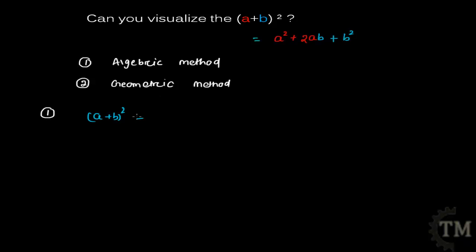Let me solve it in algebraic method. Here, (a+b)² means we can write it as (a+b) into (a+b). Now I will apply distributive law: a will be multiplied with a and a will be multiplied with b, that is a² + ab, then b with a and b with b: ab + b². This gives a² + 2ab + b². But this is algebraic method.